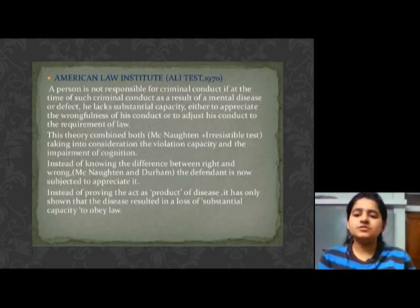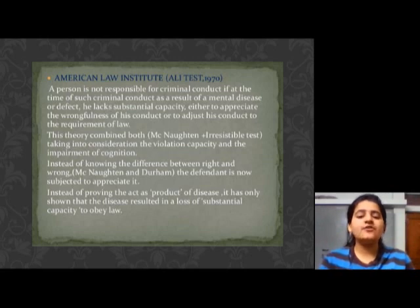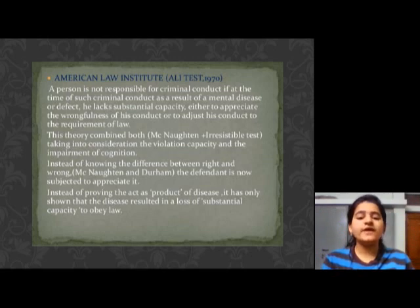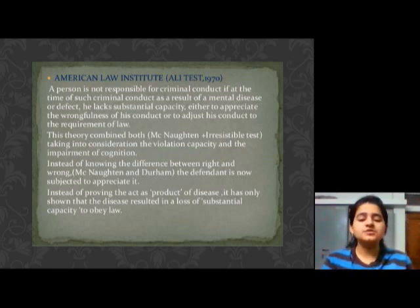The American Law Institute gave its test in 1970. According to the American Law Institute, a person is not responsible for the offenses if at the time of such criminal conduct, as a result of mental defect, the theory covers both McNaughton and the Irresistible Impulse Test. They try to prove that the criminality was the product of disease and results in loss of substantial capacity to obey the law.